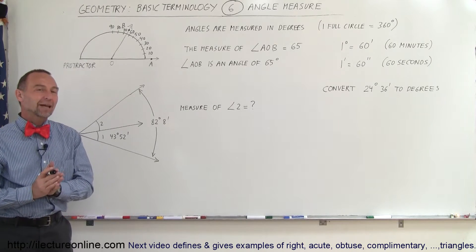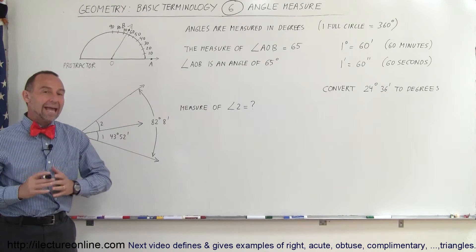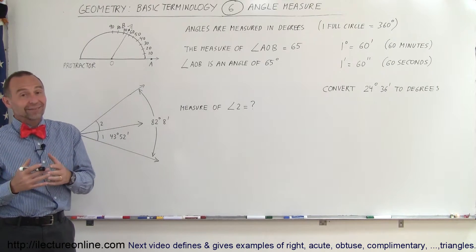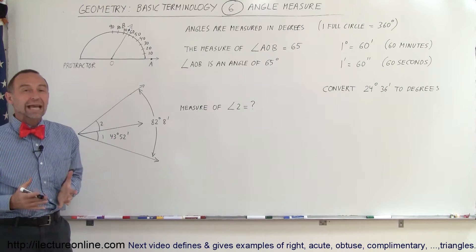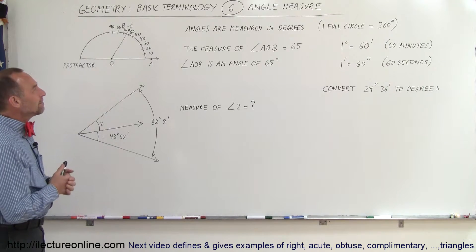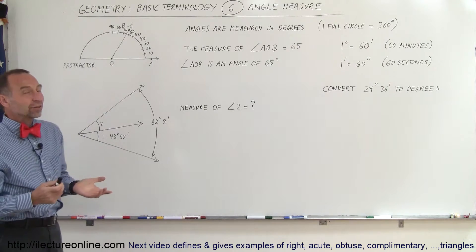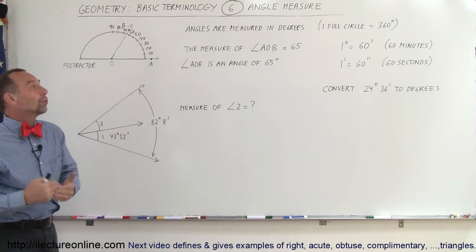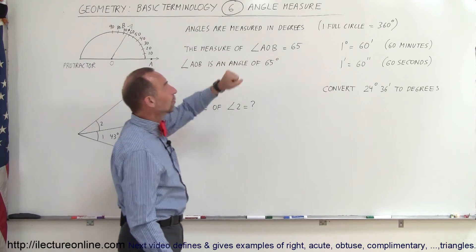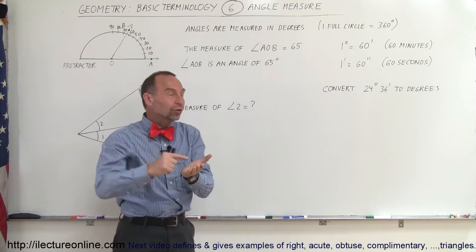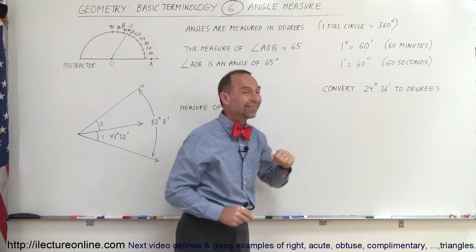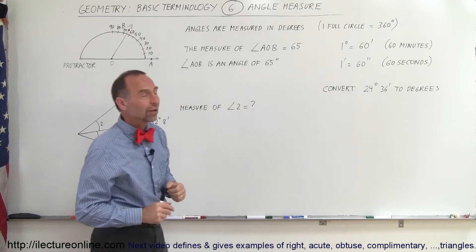Welcome to Electronline. Now let's talk about angle measure — it indicates the size of the angle. How do we measure angles? We use degrees. Angles are measured in degrees, and if we have a full circle, that full circle equals 360 degrees.